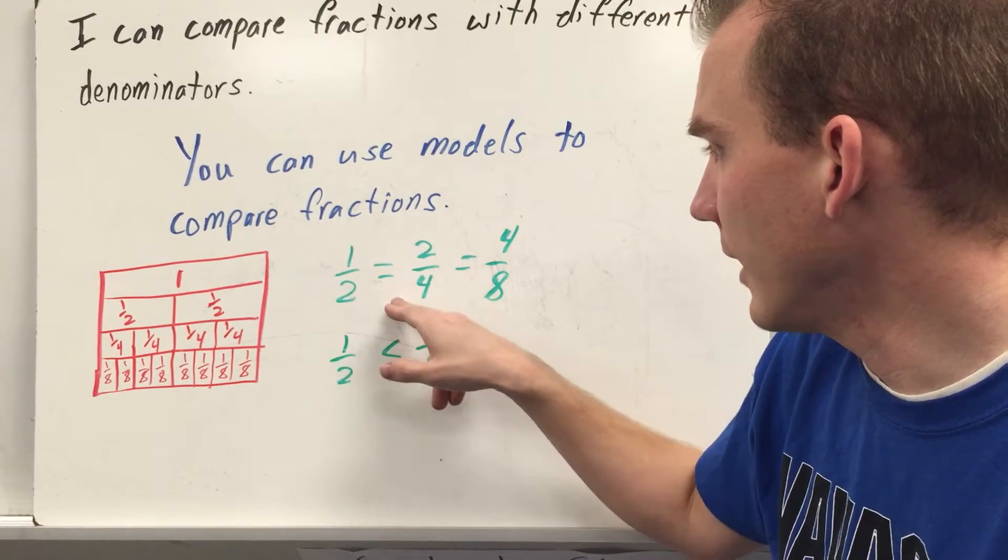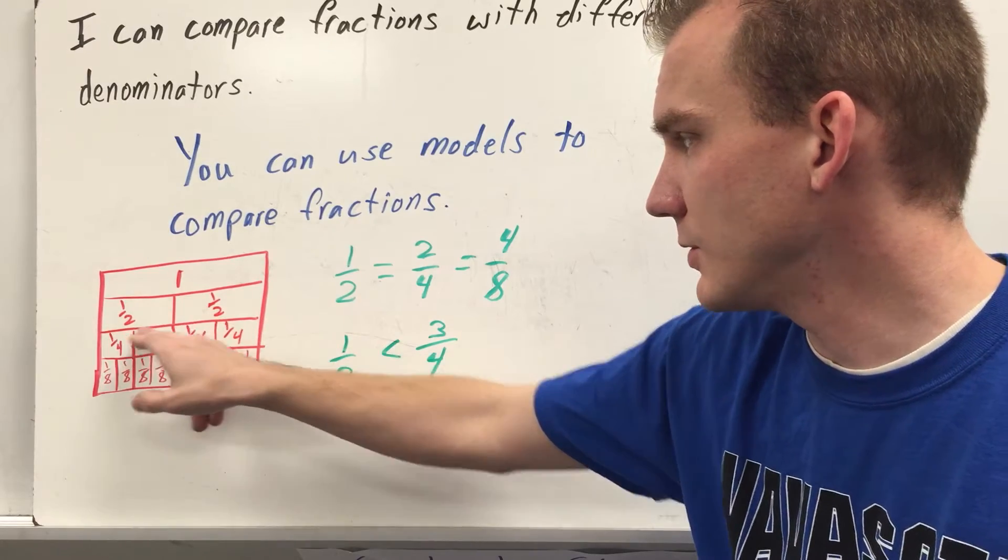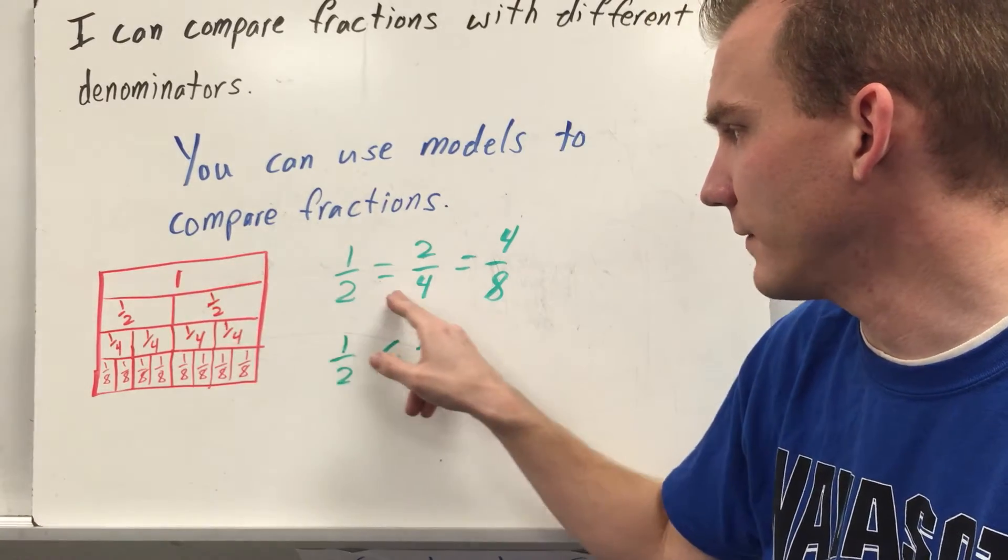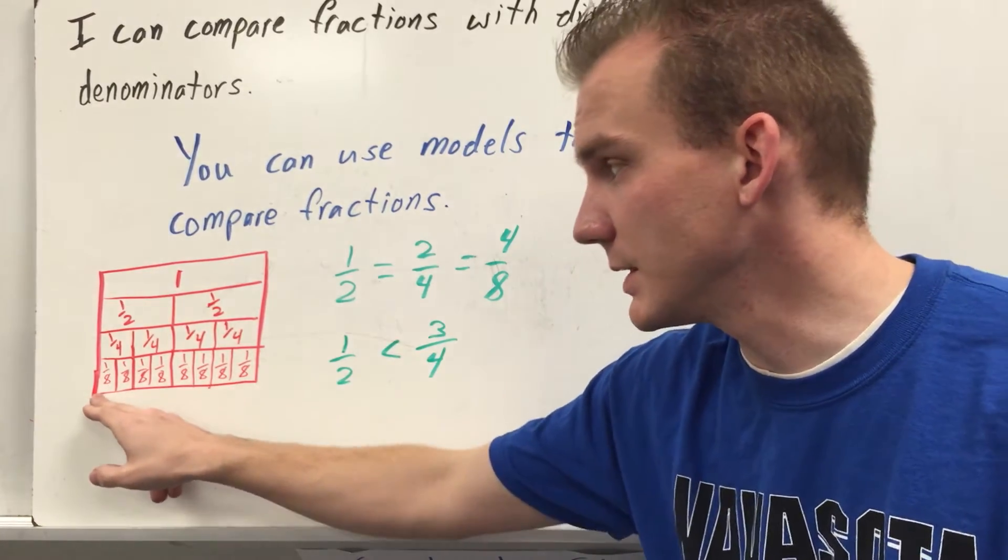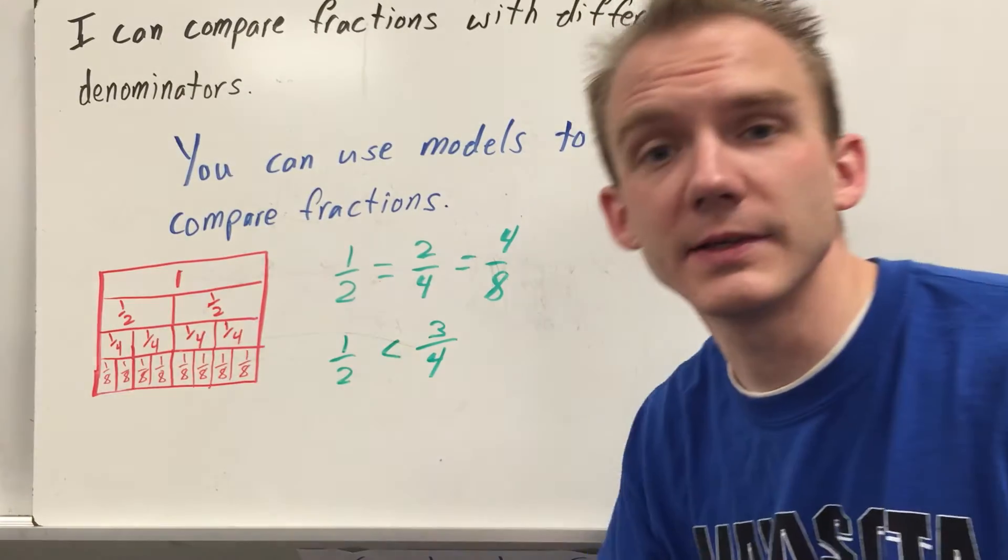For example, you see with 1 half and 2 fourths using these fraction strips, you see this is 1 half and 2 fourths, they line up perfectly. So 1 half equals 2 fourths. And also you can see that down here, 1, 2, 3, 4 eighths is the same as 1 half as 2 fourths.